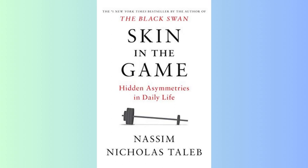Languages, unlike genes, are subject to minority rule. A lingua franca can emerge based on the language spoken by a powerful minority, as with the spread of Aramaic by the Persians or English in business settings. The choices of bilingual speakers also show minority rule in action. Genes are subject to majority rule and change slowly over time, while languages can spread quickly due to minority rule. Racial theories that link language, culture, and genetics are misguided, as populations often remain genetically continuous while undergoing shifts in language or culture. Recognizing these dynamics leads to a more nuanced understanding of how populations change over time.